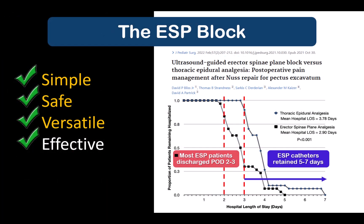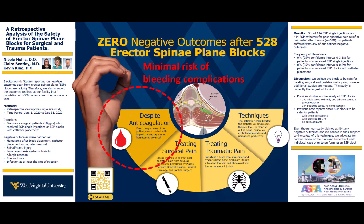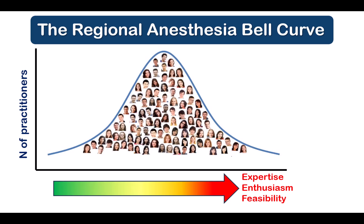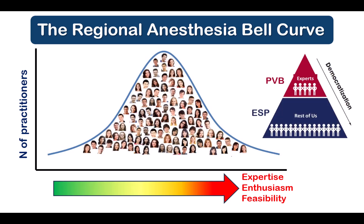The ESP block is highly versatile and can be used where other blocks are not an option. For example, it can be employed in an outpatient catheter service, as one group from Colorado described for their pediatric hernia repairs — patients discharged earlier and continuing to benefit from catheters post-discharge for up to seven days. Patients with an abnormal coagulation profile are another population that has benefited. It is also a more accessible technique for practitioners who are not as skilled — the same reason the fascia iliaca block is so popular for hip fracture analgesia. Both ESP and fascia iliaca blocks are not always perfect, but the analgesia is almost always good enough.